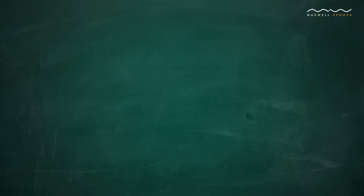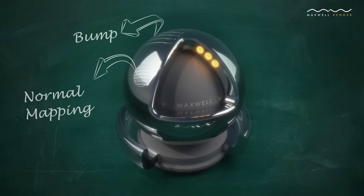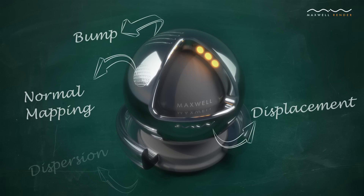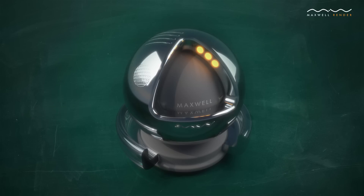Maxwell materials are not only physically correct, but also very flexible and versatile, and include features such as bump normal mapping, displacement, and dispersion of light, as well as emitting properties.